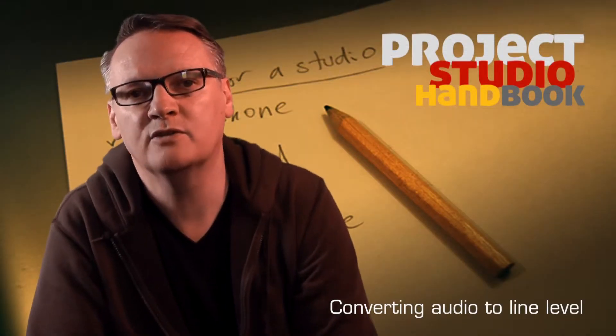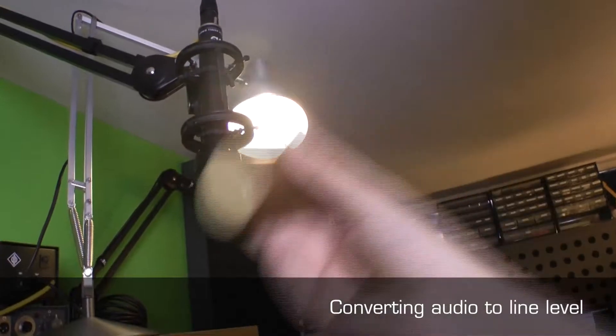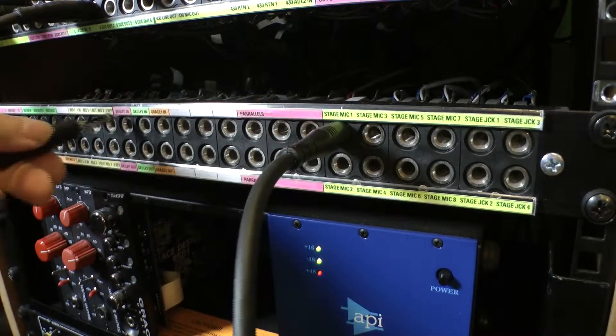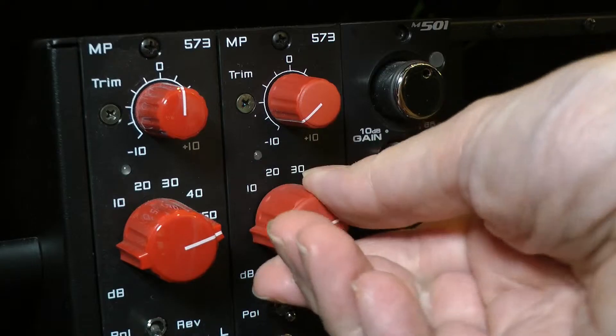If a sound that is to be recorded is not at line level, it must first be converted. In the case of a mic level signal, this means passing it through a microphone preamplifier to be amplified up to line level.